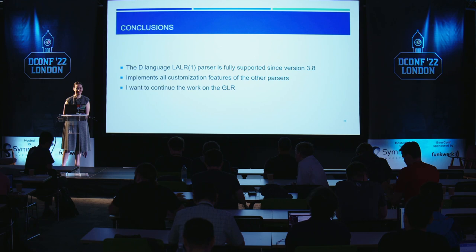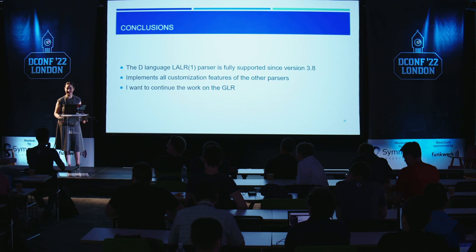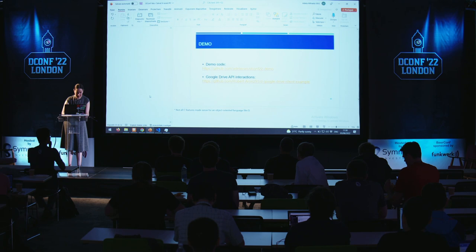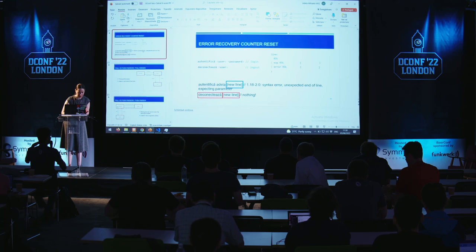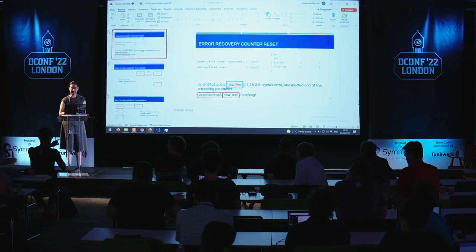An audience member clarifies: regarding the error slides, it's the code generated by Bison that gives or skips errors — not Bison itself. The speaker confirms. Another question: the advantage of Bison is handling complex expressions, but the demo example seemed very simple. The speaker explains the demo was intentionally simple for presentation, but Bison can parse entire languages — it was used in the first C compiler.